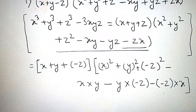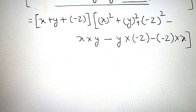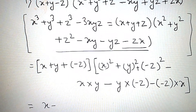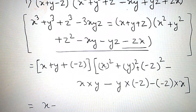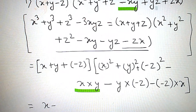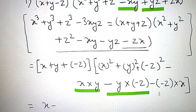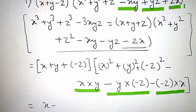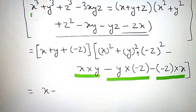अब इस form में लिख दिये हैं। अब लिखने के बाद: x + y — x² तो x² आ रहा है, y² तो y² आ रहा है, (minus z)² तो z² ही आएगा। Formula में minus xy ही आ रहा है। Plus yz है — minus into minus तो plus yz भी आ रहा है। Minus into plus तो plus zx हो जाएगा — question में भी zx है।